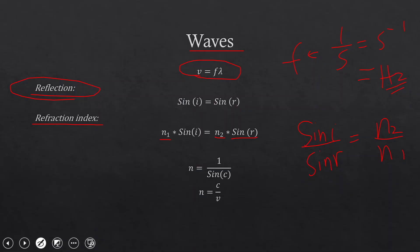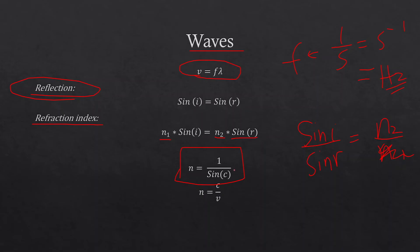When light travels from air (n₁ ≈ 1), the refractive index of the second medium equals sin i / sin r. Then n = 1/sin c, where c is the critical angle — the angle of incidence at which the refracted ray travels perpendicular to the normal and total internal reflection begins. Also, n = c/v, where c is the speed of light in vacuum (3 × 10⁸ m/s) and v is the speed of light in that medium.